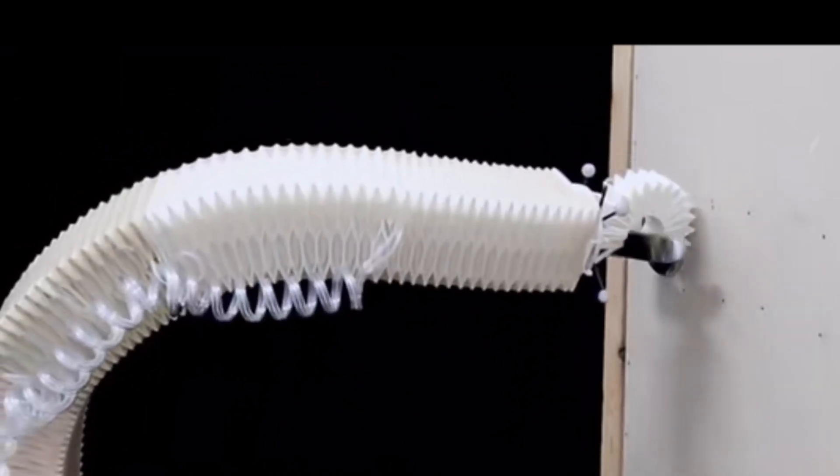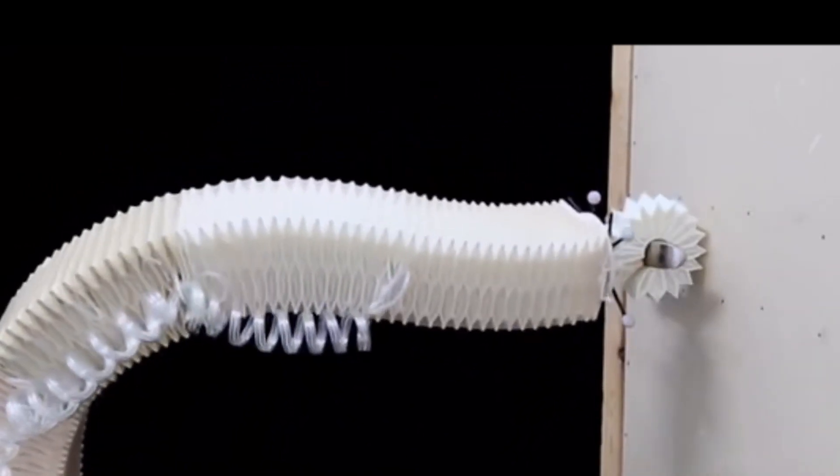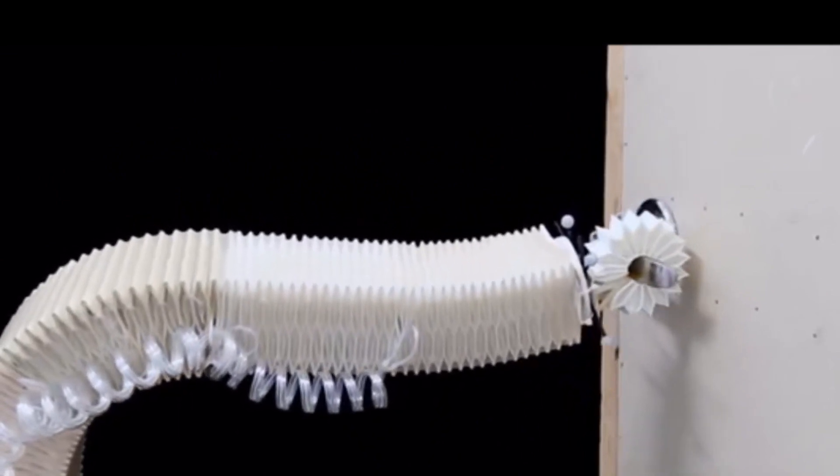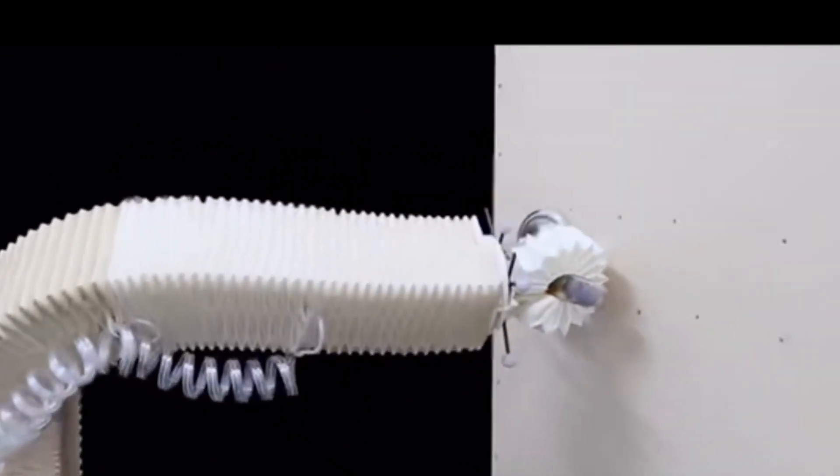At present, most soft robots, such as flexible grippers, underwater soft robots, soft surgical robots, etc., use relatively soft flexible materials as the main body, such as silicone.